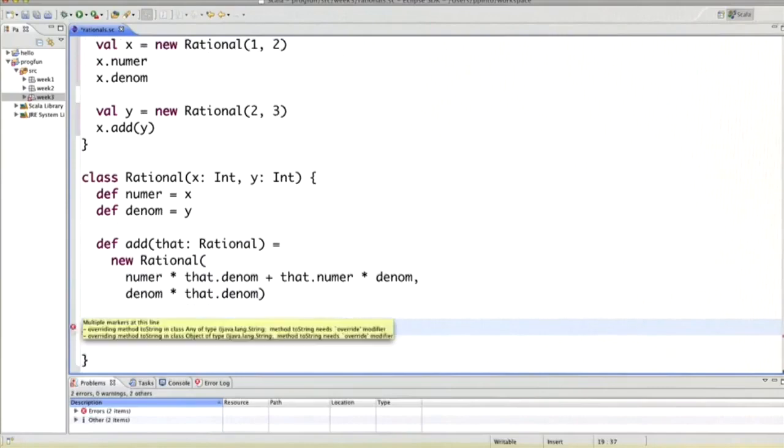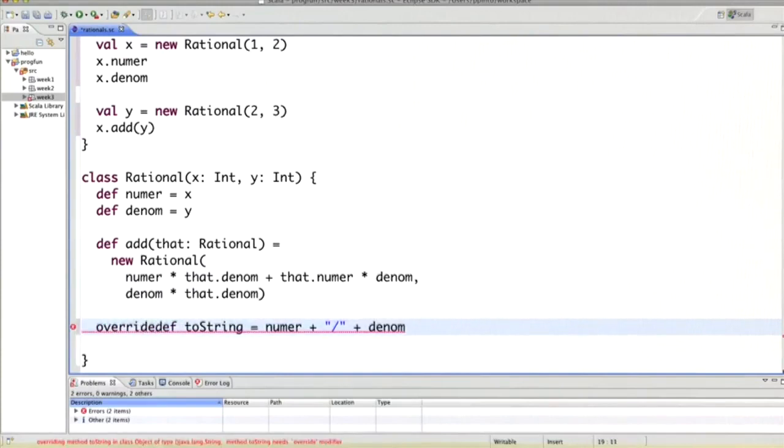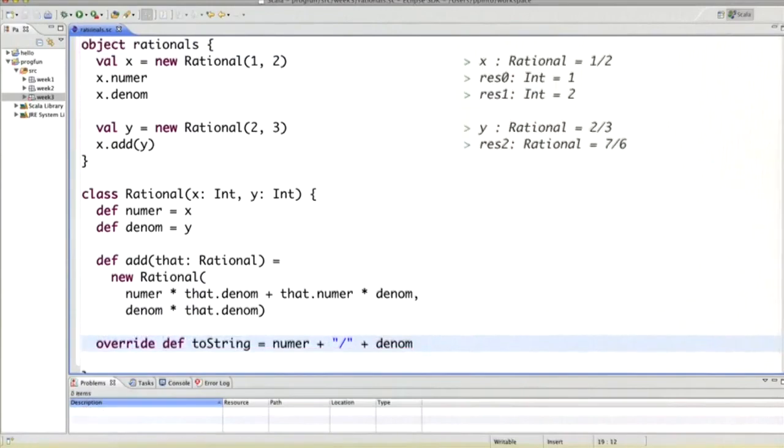We see an error here. It says that we override a method and we need an override modifier. I'll explain that later on what that means. So now let's just do as Eclipse suggests. And we see that all rational numbers now print nicely.